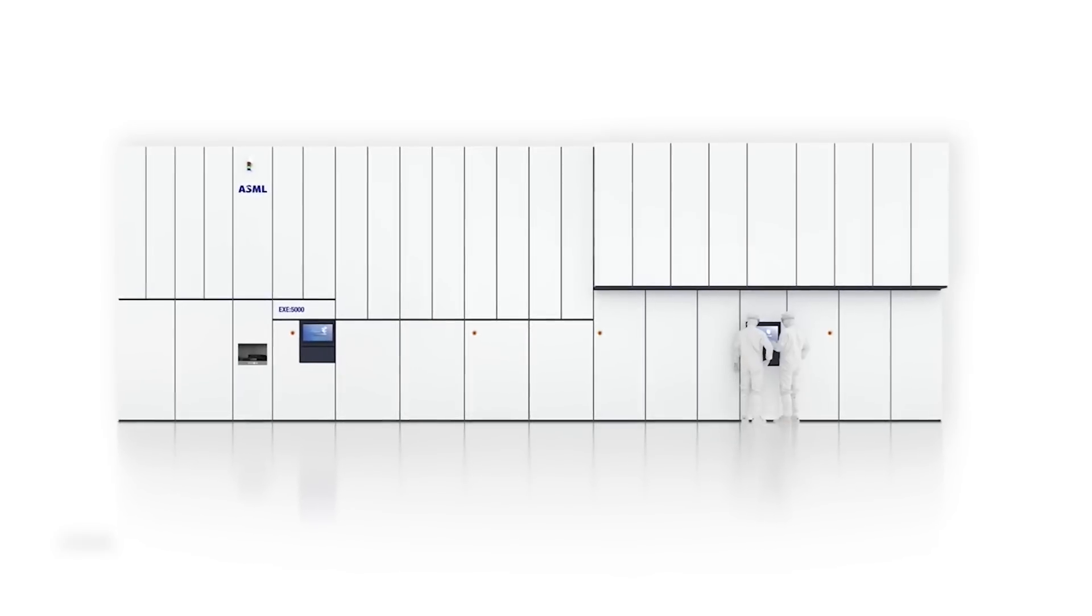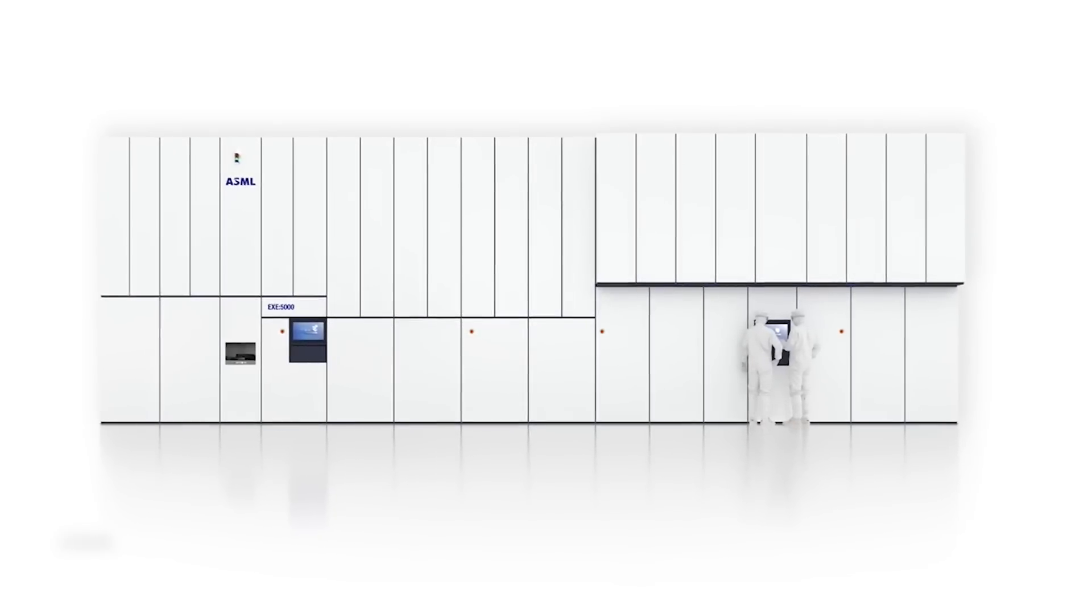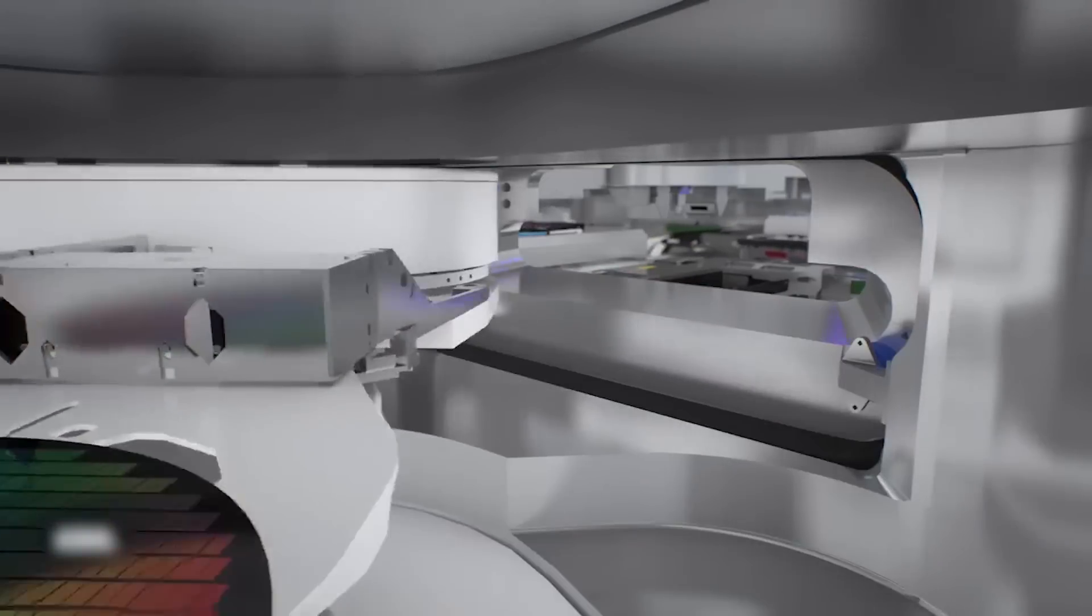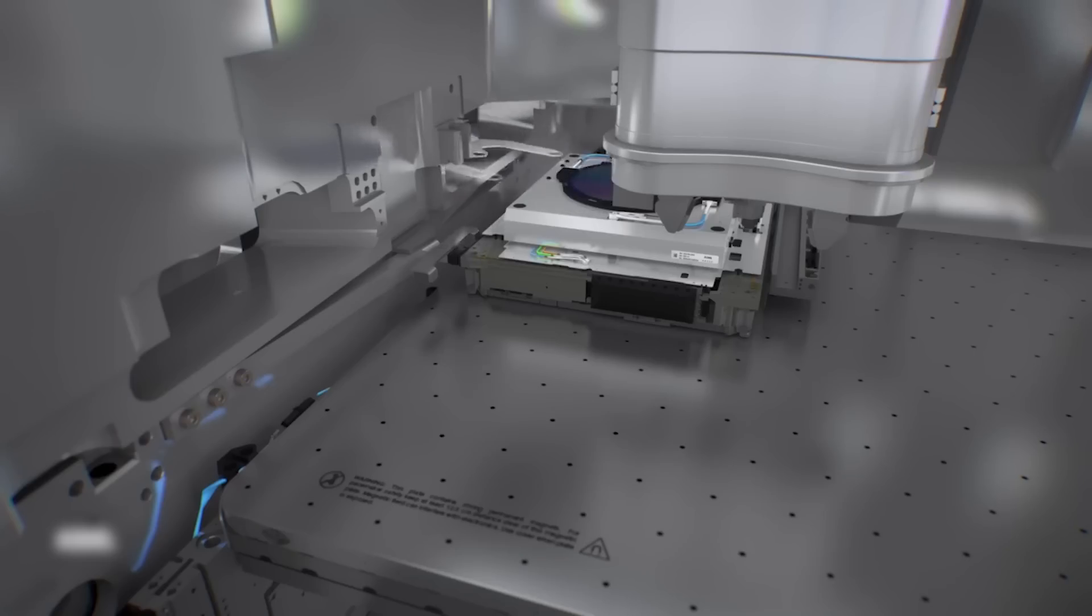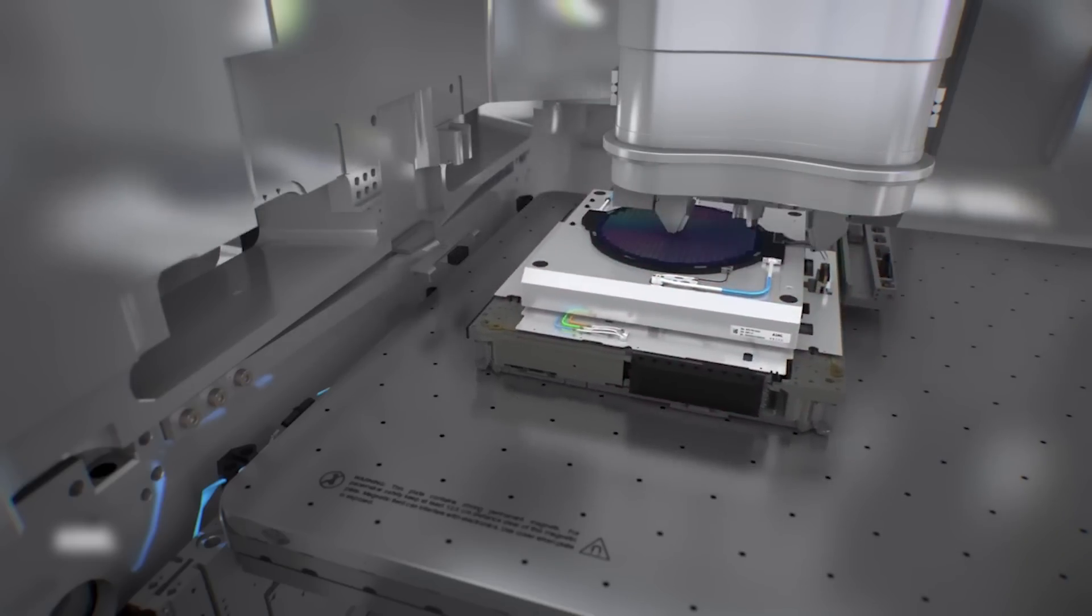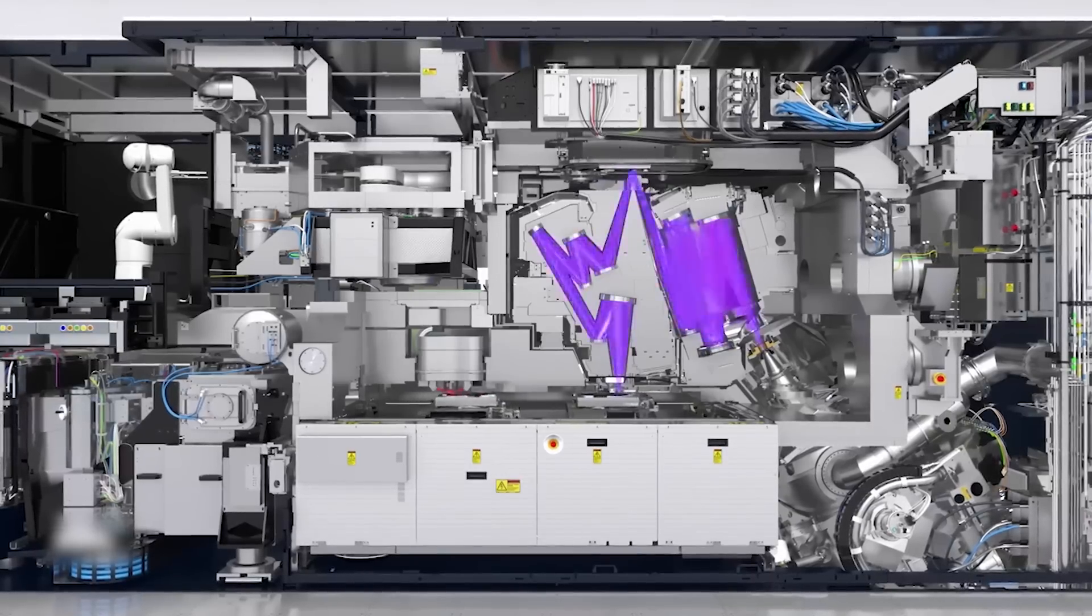Lithography, the process of creating patterns on a wafer, is the beginning of the chip manufacturing process and consists of two stages: photo mask making and pattern projection. It is fundamentally an imaging problem at the limits of physics.